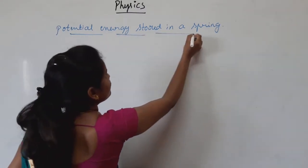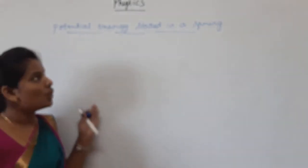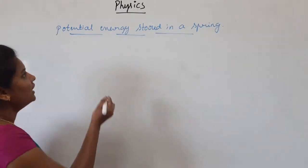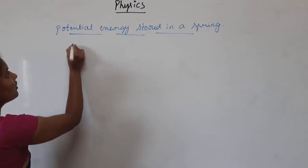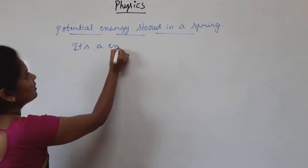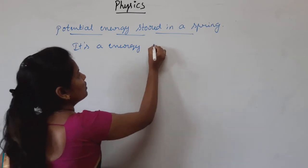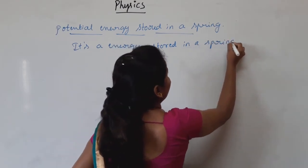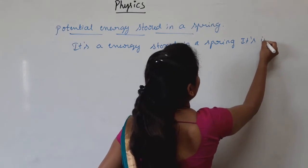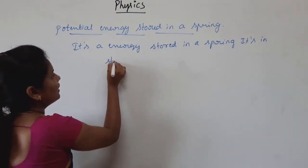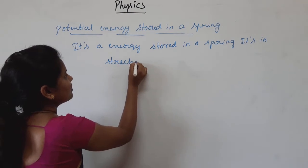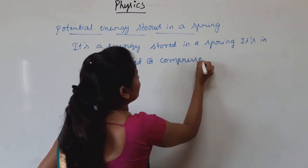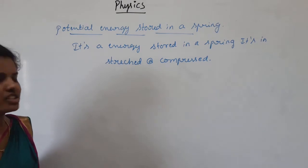Potential energy stored in a spring is an energy stored in a spring in its compressed or stretched condition. This is called the potential energy of a spring.